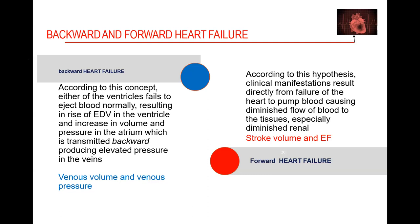Left heart backward failure causes pulmonary edema; forward failure causes systemic hypoperfusion. Right heart backward failure causes systemic venous engorgement; forward failure causes reduction in pulmonary blood flow. When I have backward failure of one ventricle, it will ultimately affect the other. MAP minus CVP should be greater than 50. With a CVP of 20 and a MAP of 60, that gradient is less than 50. There is evidence of backward failure from the right heart affecting the left heart, and therefore left heart forward failure.